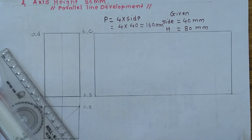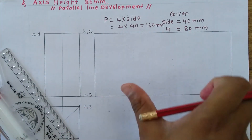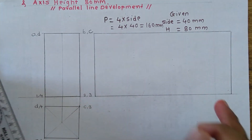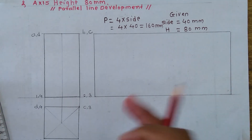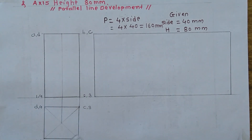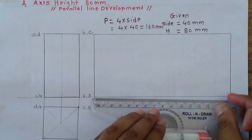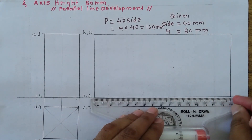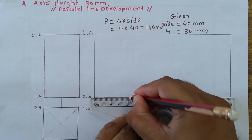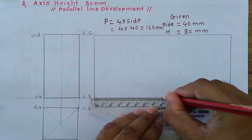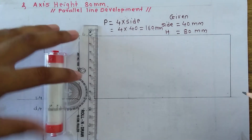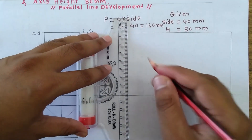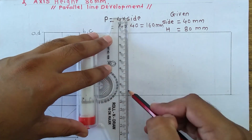Now our developed part is this rectangle. We have to divide this rectangle into equal parts. As per the top view, that square has 4 sides, so we have to divide this development rectangle into 4 parts. 160 divided by 4 means each side will be 40 mm. So I will divide it at 40, 80, 120, and the last will be 160. After that I have to take projections into the front view.